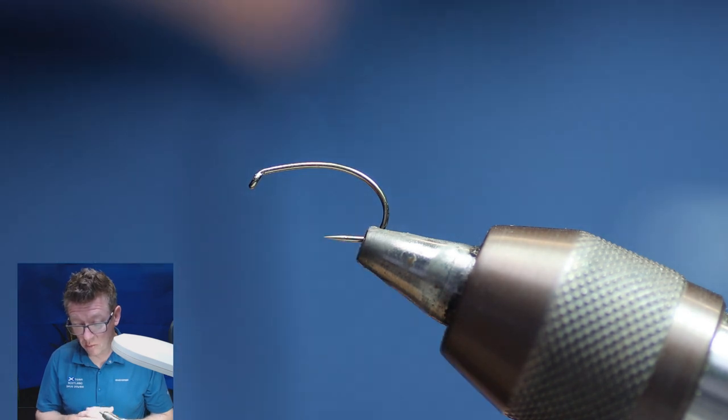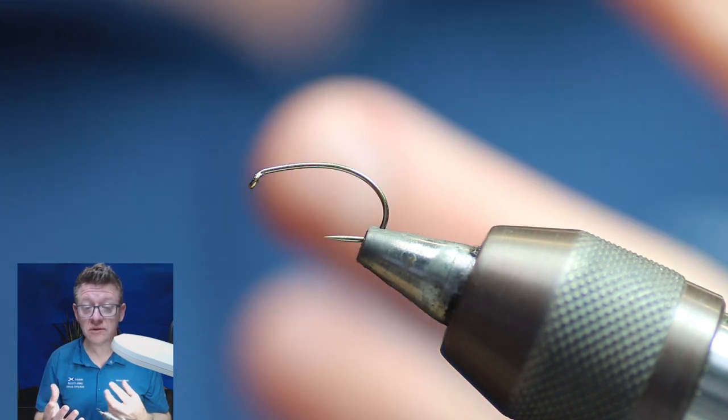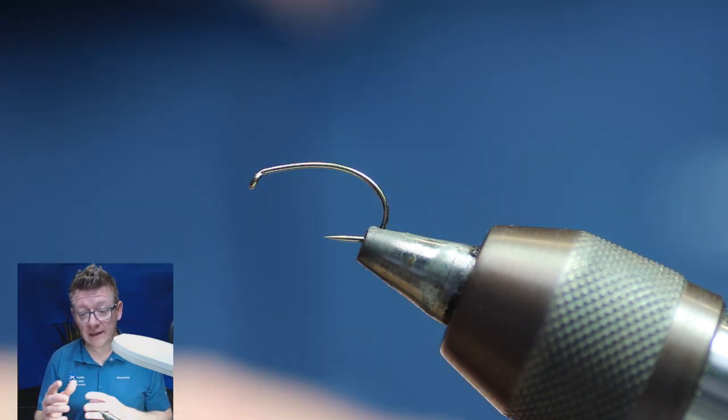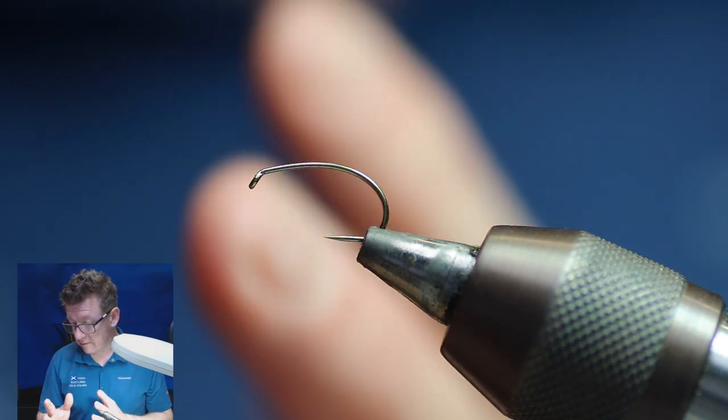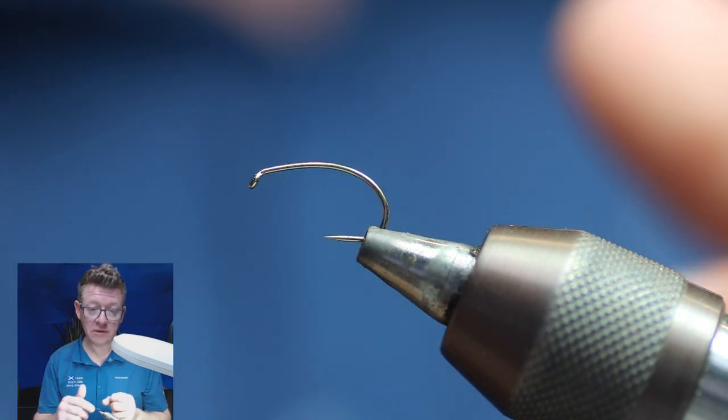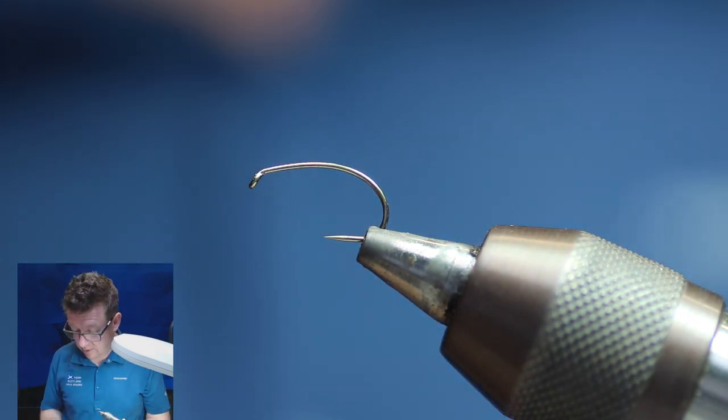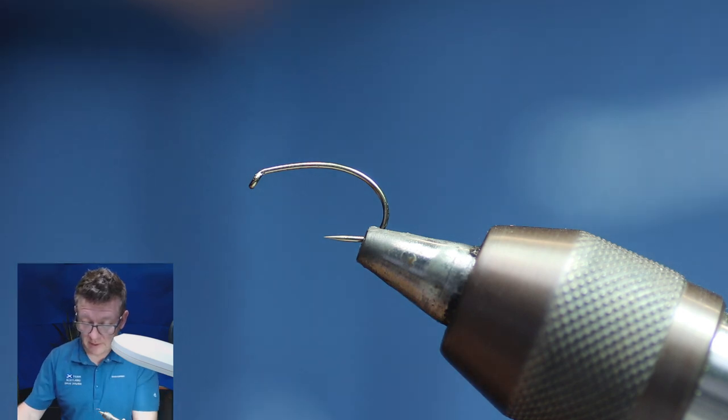Today I'm going to be tying a little buzzer - it's a sort of variation of a Blakestone buzzer. You could actually stop tying it at the end and not do what I'm going to do and use it as a buzzer, or you can do what I'm going to do and finish it off. So I'll get on with it, I'll stop talking and let you see how I tie it.